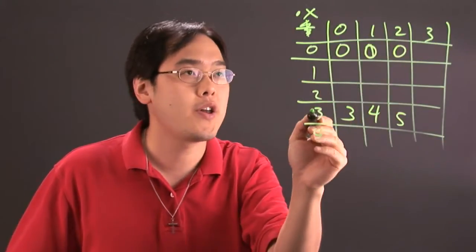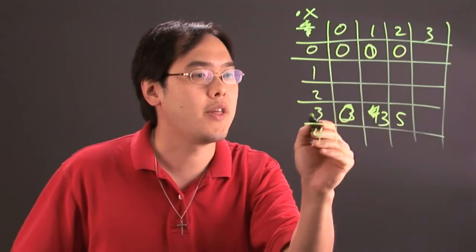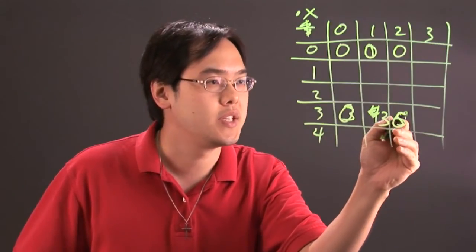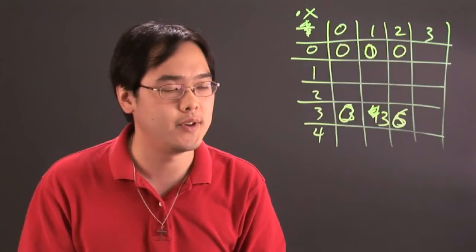And then using the 3, 3 times 0 is 0, 3 times 1 is 3, and 3 times 2 is going to give you 6. And you keep on working at it until you get all the rows and columns filled up.